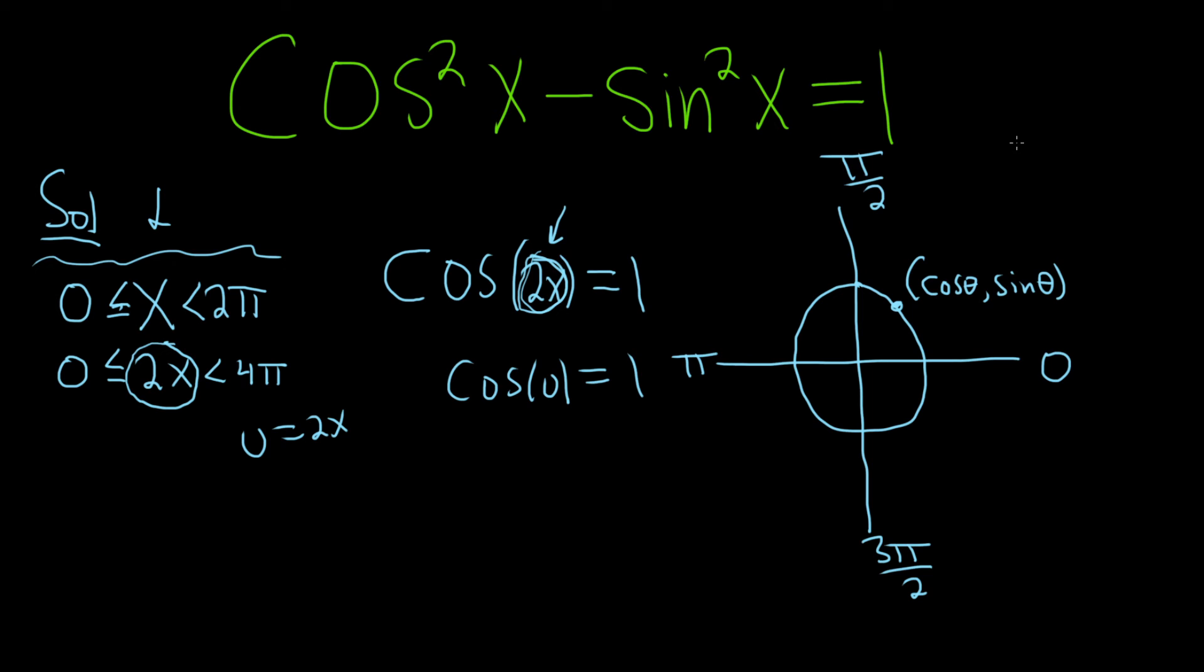So we want the places where the x-coordinate is 1. It's going to be here and here. Uh, no, you know, it's going to be here, 1 comma 0. And that's it. I think this is the only place, yeah, this is the only place where the x-coordinate is going to be 1. So the only angles would be 0. So u equals 0.